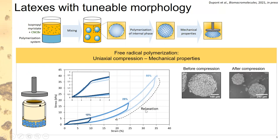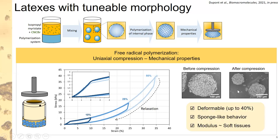Importantly, before and after compression, the beads maintained a similar morphology — still spherical, not broken, and still bearing CNCs at the surface. The system always returns to zero percent strain, meaning the beads fully recover their shape. We therefore have a system deformable up to 50% that adopts a sponge-like behavior, with a modulus of around a dozen to 100 kilopascals — similar to soft tissues — which may be interesting for biorelated applications.